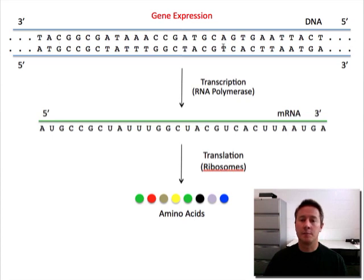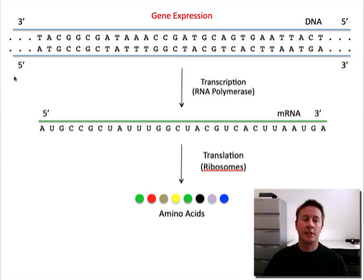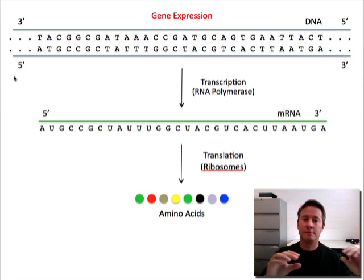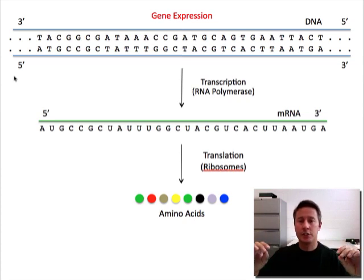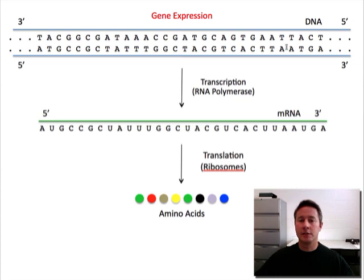So first of all, we have a particular gene that's going to be expressed — the cell is going to make a protein corresponding to that particular gene. There's a molecular machine called RNA polymerase, and it will read through and make a copy — a single-stranded copy — of that particular gene. This copy is called RNA, specifically messenger RNA or mRNA for short. Since genes are spaced out on chromosomes, when RNA polymerase comes through and makes a copy of a particular gene being expressed, it just makes a copy of that gene and not the intergenic regions or other genes on either side. It unwinds the double helix and reads through to make this single-stranded mRNA copy.